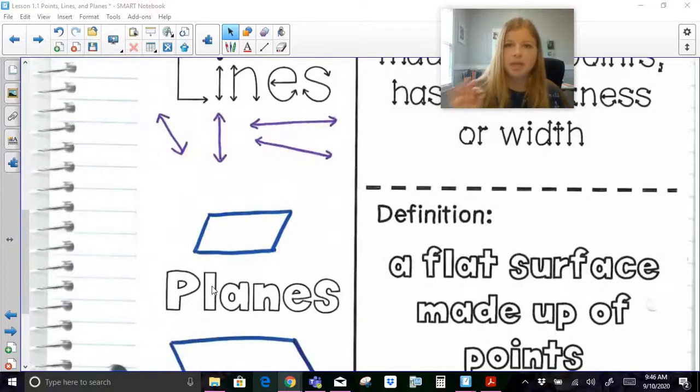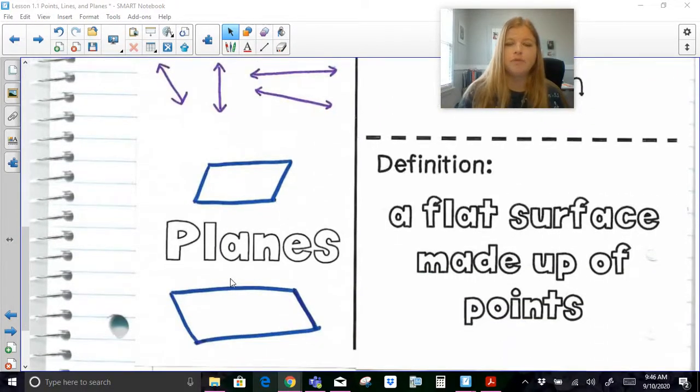The last terminology we need to know before we go forward is what a plane is. A plane is a flat surface, so think of a piece of paper. It's a flat surface made up of points, and points that create lines then create this entire plane. It's made of all these intersecting lines all over the place, and it creates that one flat surface that extends indefinitely in those two directions.